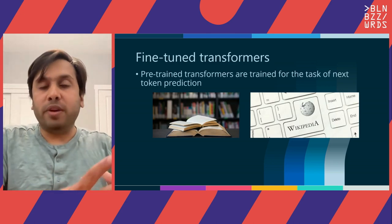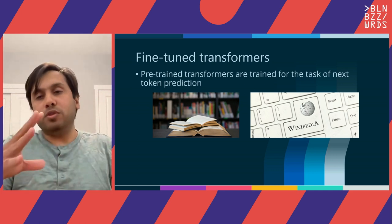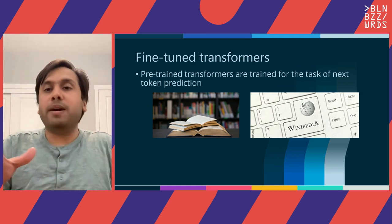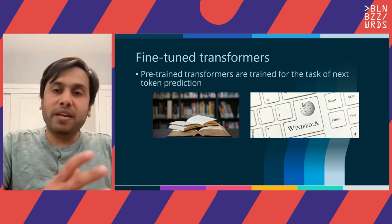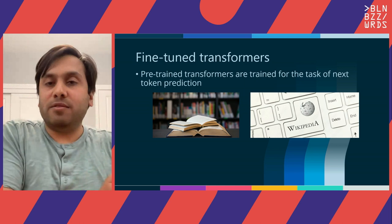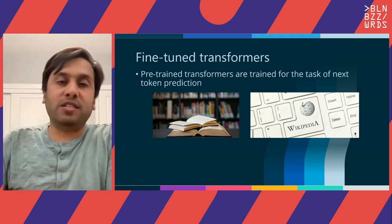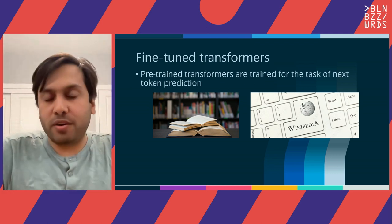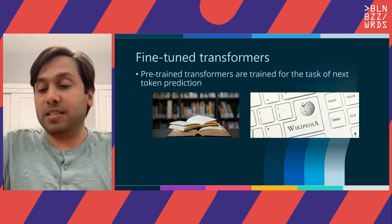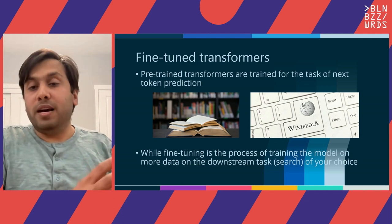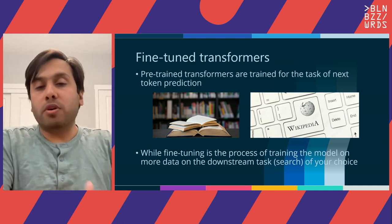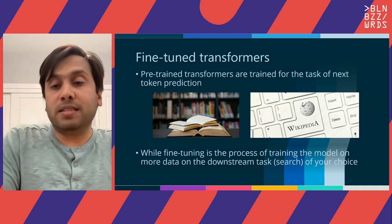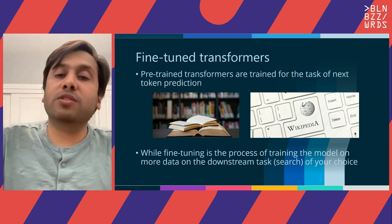First I'll define what fine-tuned models are, so we need to understand pre-trained transformers. Pre-trained transformers are the most primitive models you can obtain, trained on terabytes of data on datasets such as all of Wikipedia, Wikibooks, and so on — trained for a single task, which is to predict the next token in the sentence. Fine-tuning is what happens after the pre-trained transformer has finished pre-training. For fine-tuning, you take the model and train it on more data on the task of your choice. For us, that task is going to be search.